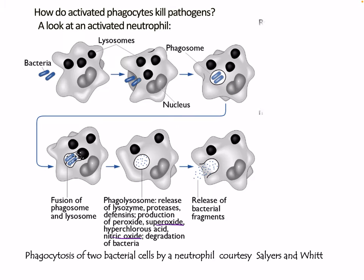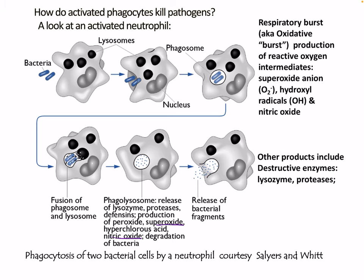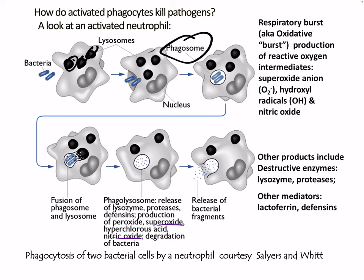Here's the pathway: a bacterium merges with a phagocyte. We can see lysosomes in the cell. We go from the phagosome to the phagolysosome via fusion, where there is release of granule products including lysozyme, protease, and defensins, as well as reactive oxygen species including superoxide, hydrochlorous acid, and nitric oxide. The cell degrades the pathogen and releases the remnants. Additional mediators include lactoferrin and defensins.